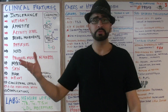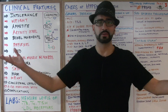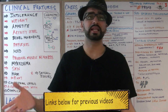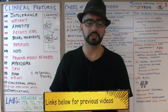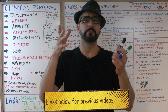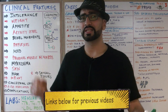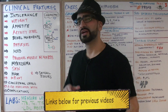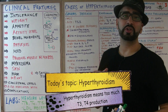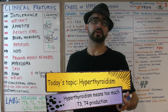Welcome back everyone to another episode of Med School Mondays with Promo. In case you missed last week's lecture, we talked about hypothyroidism, and the week before we talked about an introduction to the thyroid hormone. If you missed any of those lectures, click the links below. Today is part three of the thyroid hormone — we're going to talk about what happens when there's too much of it, which we call hyperthyroidism.